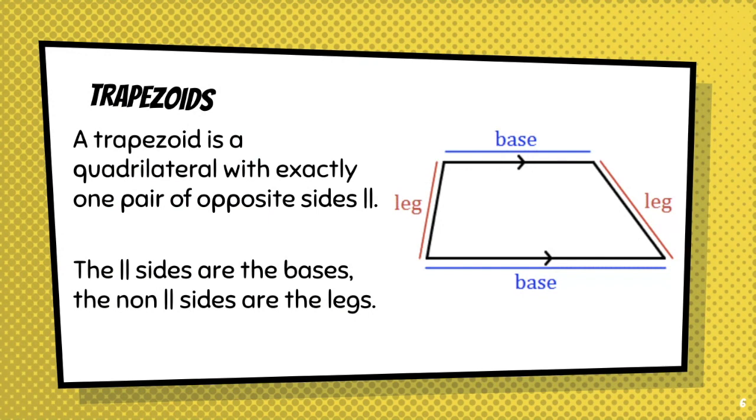And now trapezoids. With trapezoids, you have to know some terminology. These two sides are called the legs and these two sides are called the bases. A trapezoid is a quadrilateral with exactly one pair of opposite sides. Exactly one pair. That means the other pair is not parallel.